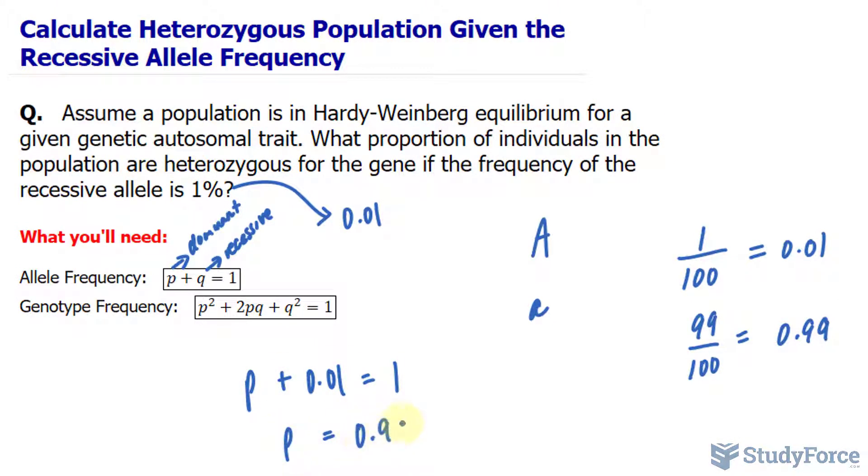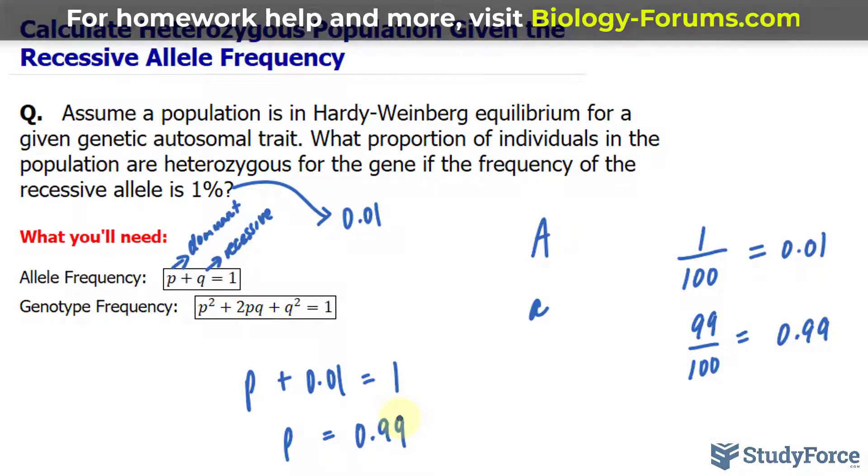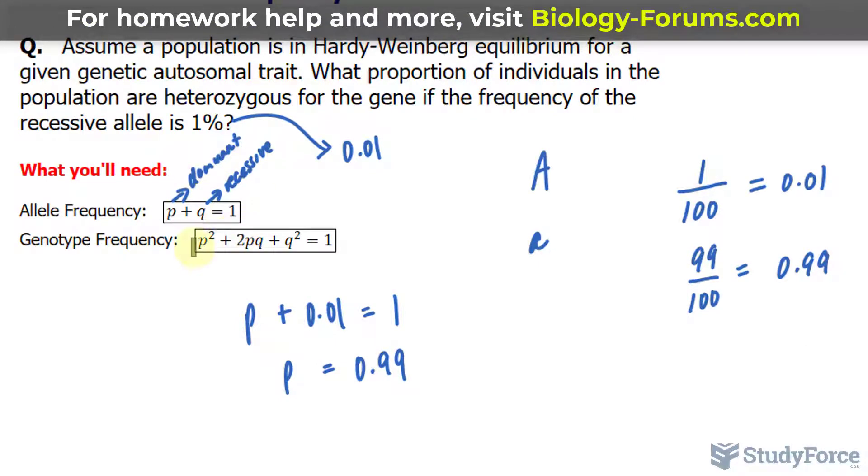To find out the proportion of individuals in the population that are heterozygous, meaning that their genotype consists of both the dominant and recessive allele, what we have to do is use the middle part of the second formula. That term right there represents the number of heterozygous individuals.